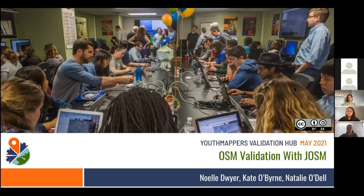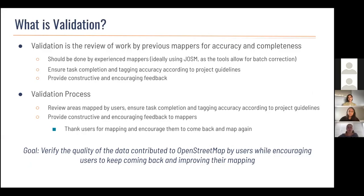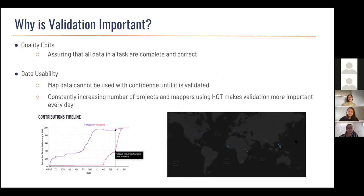This is OSM Validation with JOSM. So what is validation? Validation is the review of work done by previous mappers for accuracy and completeness. It is done by experienced mappers who review the work of others. Validators make sure that OSM standards are met and that data is accurate, complete, and consistent. It's important to ensure that mapping projects are completed and tagged accurately as per the project guidelines. We like to use JOSM because it streamlines geometry and tagging functions and has helpful validation plugins to quickly spot errors. Validators also help grow the mapping community by providing support and positive constructive feedback to new mappers. The goal of a validator is to verify the quality of data contributed to OSM while encouraging mappers to keep coming back and improving their mapping skills.